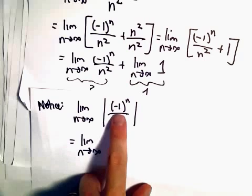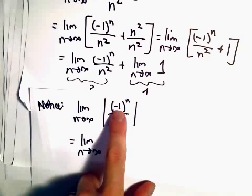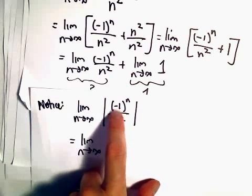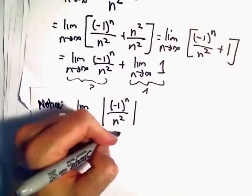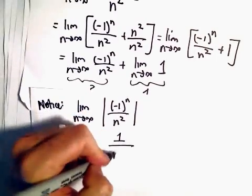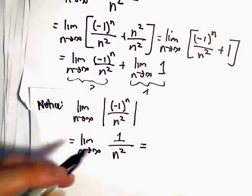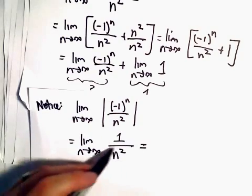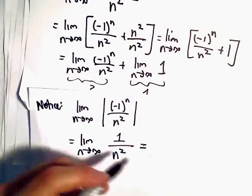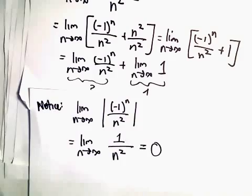Without the absolute value, we're either getting positive 1 or negative 1. When we take the absolute value of it, it'll just become positive 1 over n^2. But this limit, as n goes to infinity, the denominator will get arbitrarily large. 1 over a big number is going to be 0.